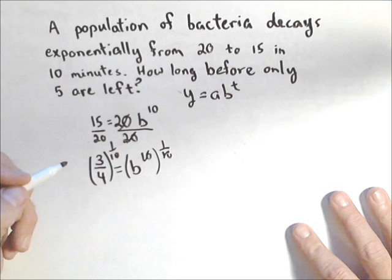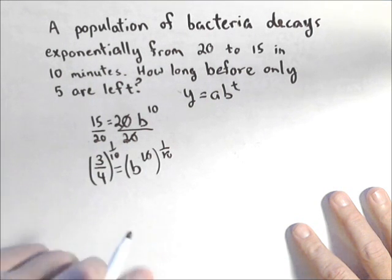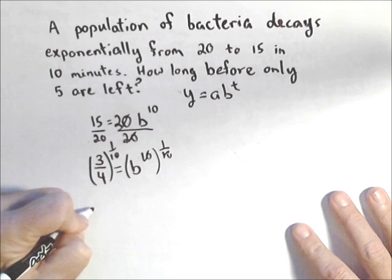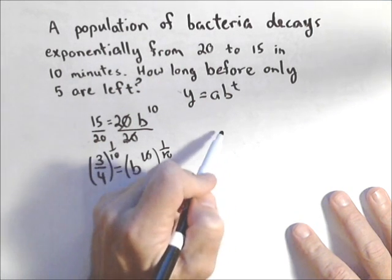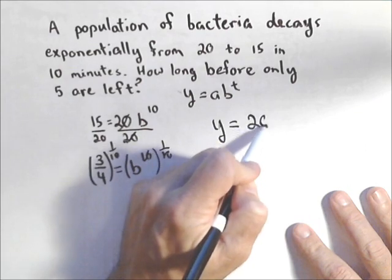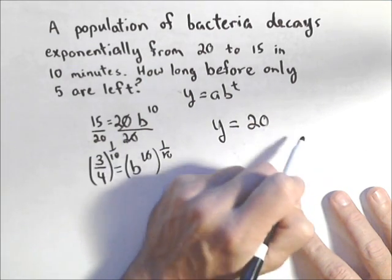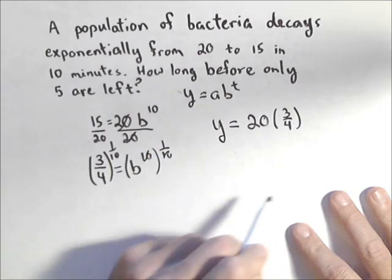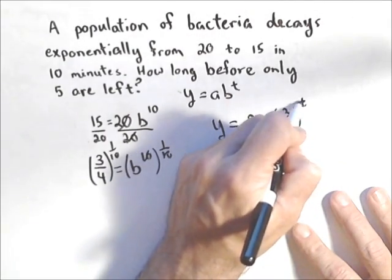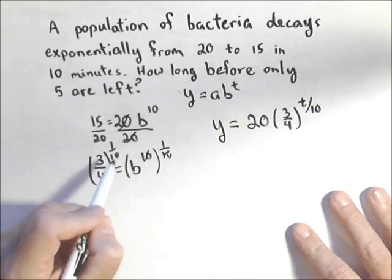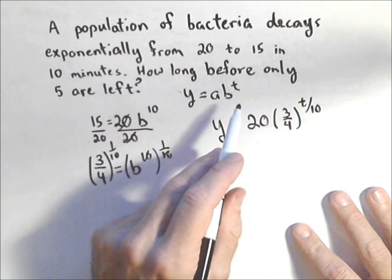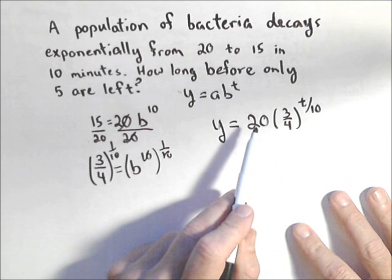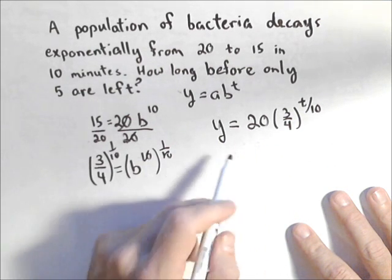So I can build my model. I'm gonna use 20 as my initial, saying that that's where it started. My model is gonna be Y equals 20 times 3 fourths, and then the way I'm gonna write this is T over 10, because I'd have 1/10th to the T, those multiply, so I get T over 10. There's my model. So I want to know when this gets down to five.